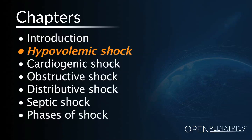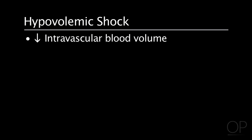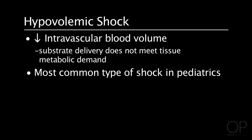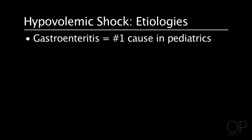Hypovolemic shock is defined by a decrease in the intravascular blood volume, which results in inadequate substrate delivery to meet the metabolic demand of the tissue. This is the most common type of shock in pediatrics. Gastroenteritis is probably the number one cause in pediatrics for hypovolemic shock. It results in fluid and electrolyte losses and is typically fluid responsive.